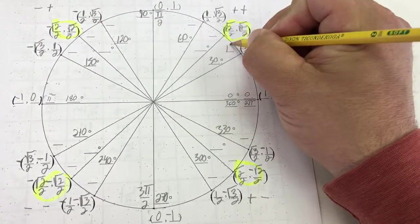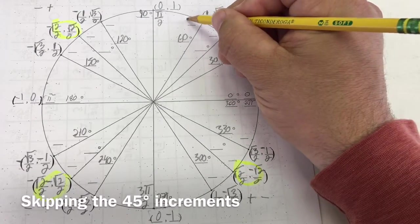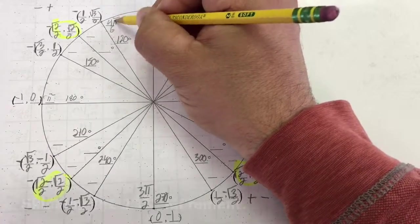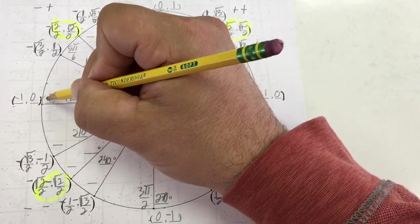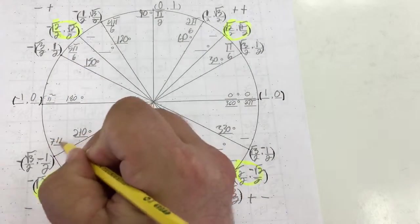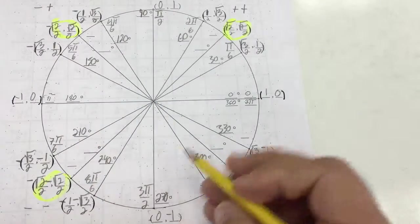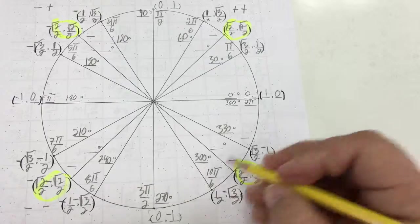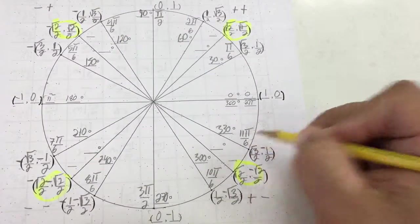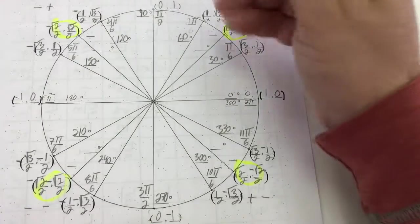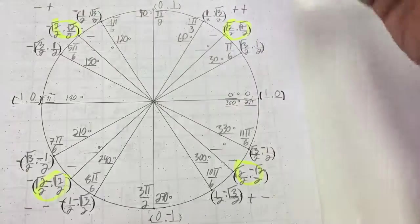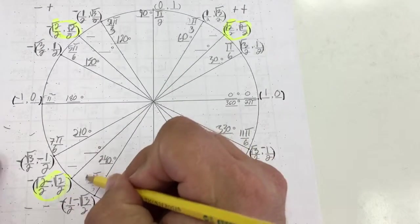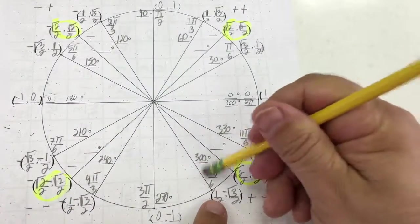That's going to give me 1 pi over 6, 2 pi over 6, 3 pi over 6 — it's already simplified. 4 pi over 6, 5 pi over 6, 6 pi over 6 — already simplified. 7 pi over 6, 8 pi over 6, 9 pi over 6 — already simplified. 10 pi over 6 — I have to simplify this one. Skip. 11 pi over 6. Now going back to simplify: 2 pi over 6 gives me pi over 3. 4 pi over 6 gives me 2 pi over 3. 8 pi over 6 gives me 4 pi over 3. 10 pi over 6 gives me 5 pi over 3.